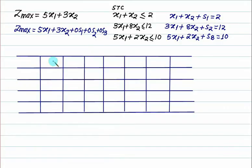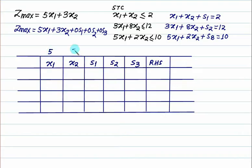In the simplex table we have columns for x1, x2, s1, s2, s3, and right-hand side. Coefficient of x1 in the objective function is 5, x2 coefficient is 3, and the coefficients of s1, s2, s3 are all 0.